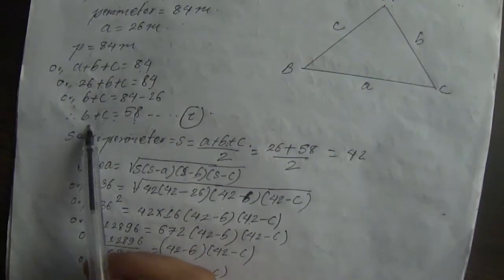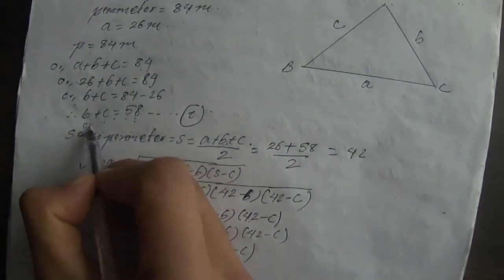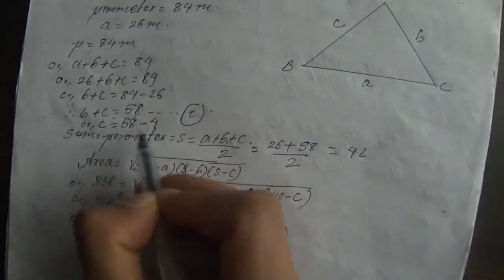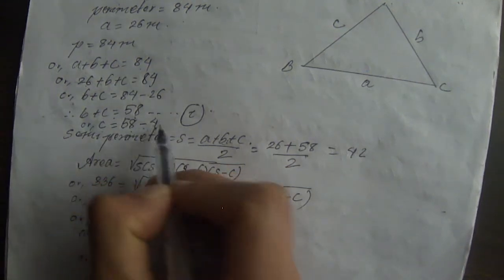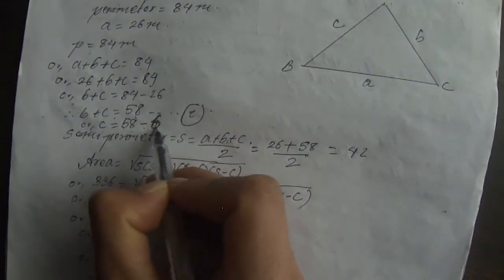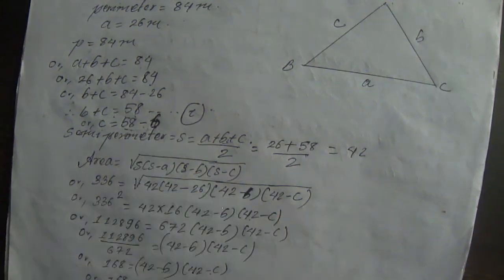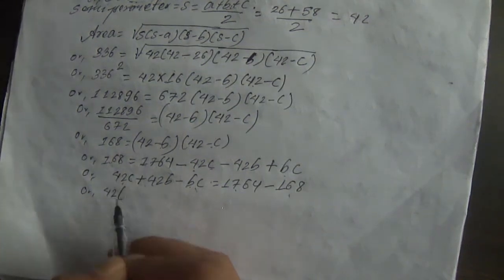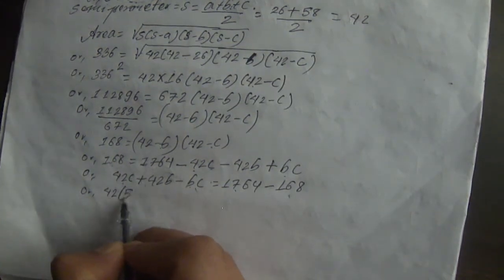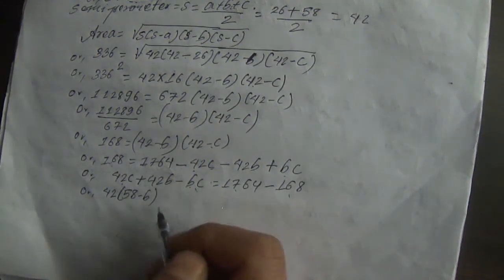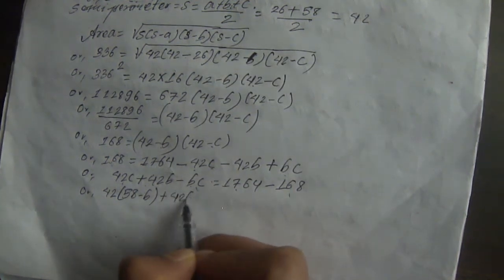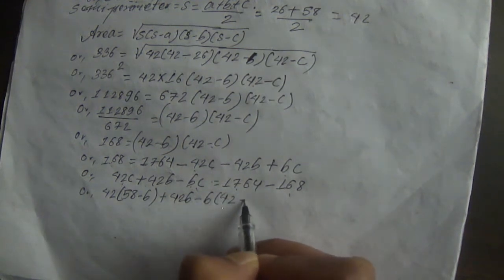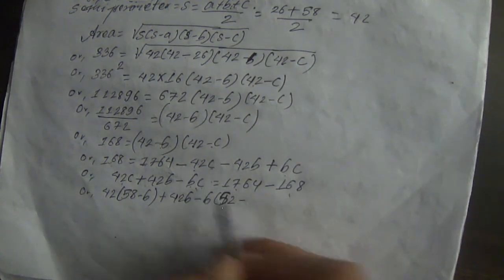We know B plus C equals 58, so C equals 58 minus B. Substituting this value: 42 times (58 minus B) plus 42B minus B times (58 minus B) gives us the next expression.